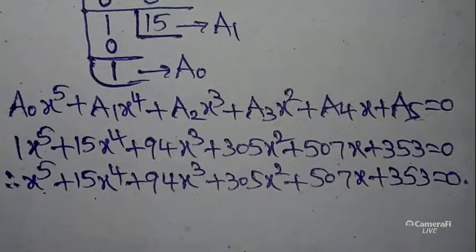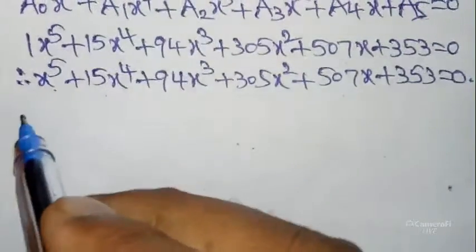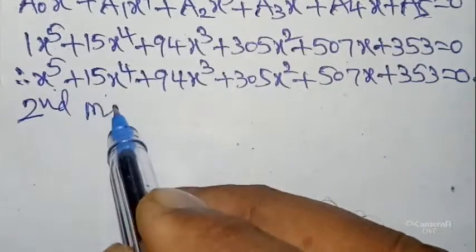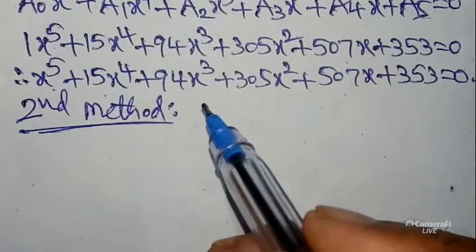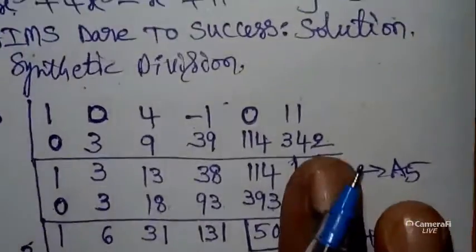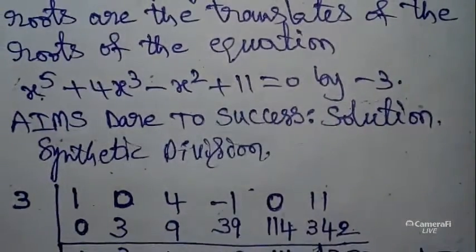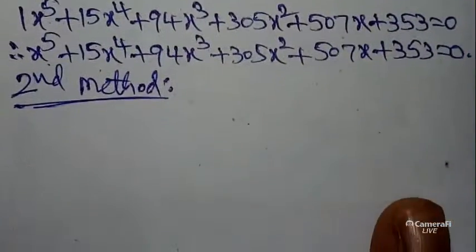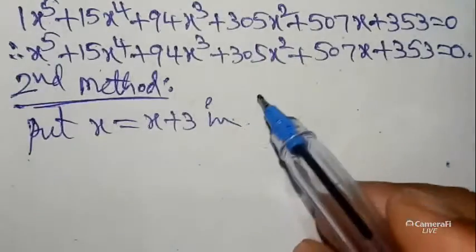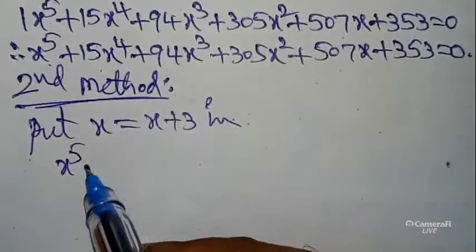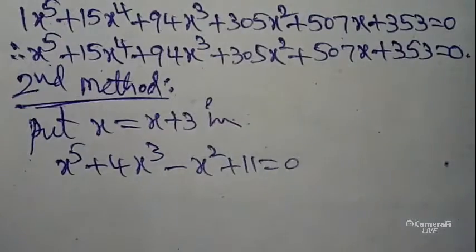My dear students, I want to tell you one more method — the second method. You can use whichever one is easier for you. For the second method, translates by -3 means take the opposite symbol, +3. Substitute x = x + 3 in the given equation x⁵ + 4x³ - x² + 11 = 0 and simplify.